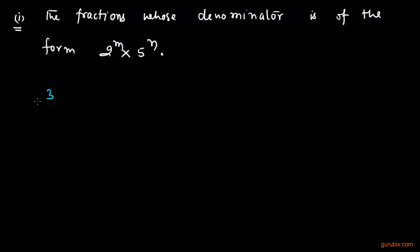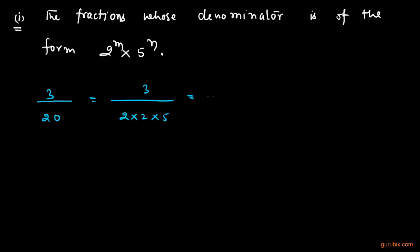Suppose we have a fraction 3 over 20 and we have to convert it into decimal form. First of all we shall factorize the denominator: that is 2 × 2 × 5, so the factors of the denominator are 2 raised to the 2nd power multiplied by 5 raised to the 1st power. We observe that the denominator is of the form 2 raised to m multiplied by 5 raised to n. Therefore, this fraction has a terminating decimal expansion.